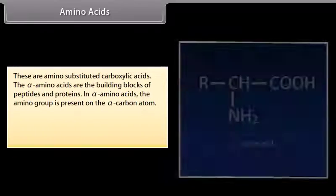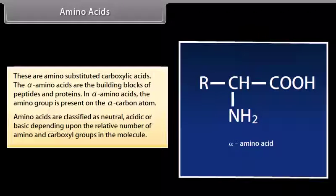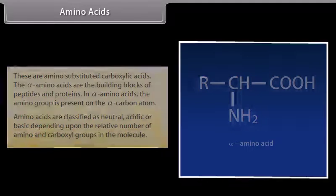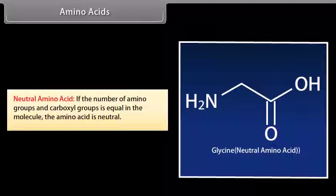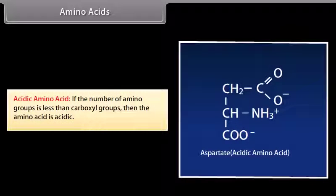Amino acids are amino-substituted carboxylic acids. The alpha amino acids are the building blocks of peptides and proteins; in alpha amino acids, the amino group is present on the alpha carbon atom. Amino acids are classified as neutral, acidic or basic depending upon the relative number of amino and carboxyl groups in the molecule. If the number of amino groups and carboxyl groups is equal, the amino acid is neutral — for example, glycine. If the number of amino groups is more than carboxyl groups, the amino acid is basic — for example, lysine. If the number of amino groups is less than carboxyl groups, the amino acid is acidic — for example, aspartate.